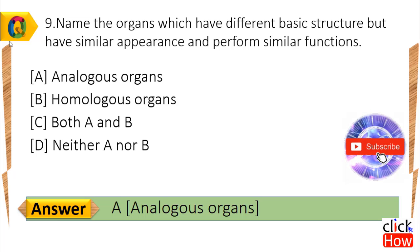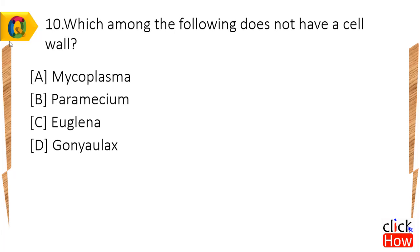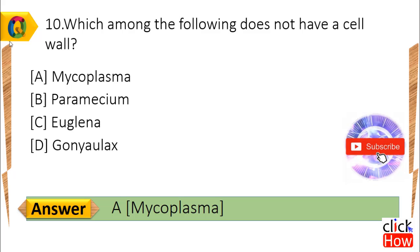Answer is A, Analogous organs. Question 10: Which among the following does not have a cell wall? Option A) Mycoplasma, B) Paramecium, C) Euglena, D) Gonulax. Answer is A, Mycoplasma.